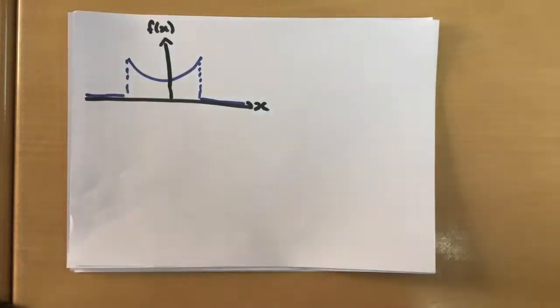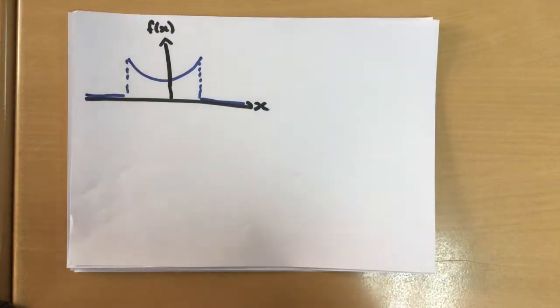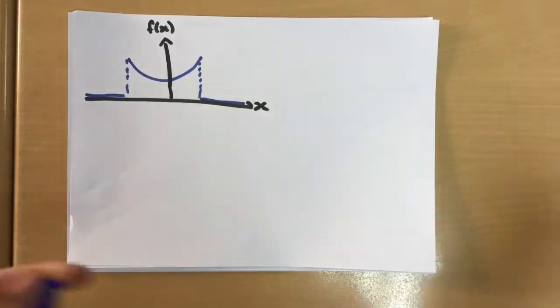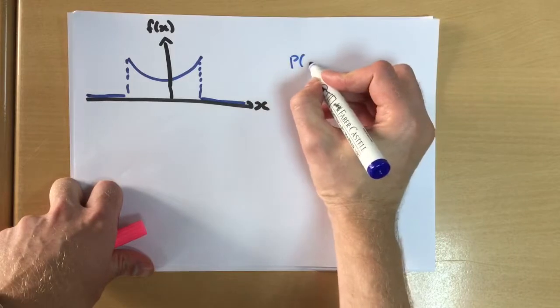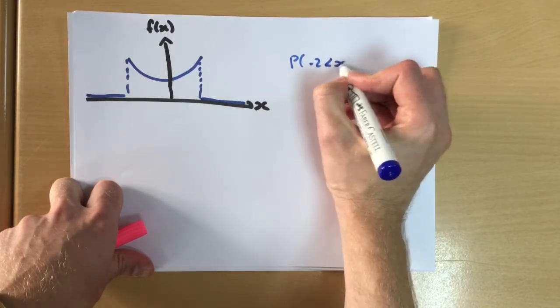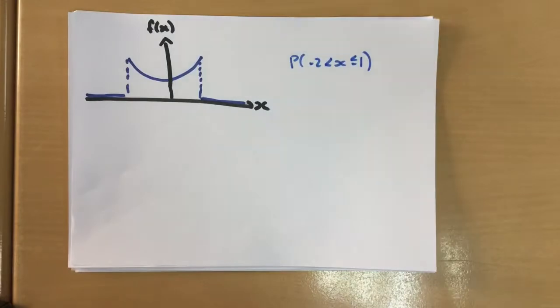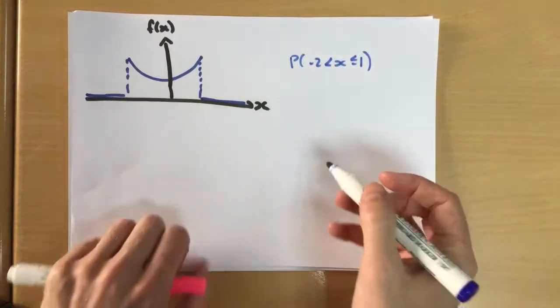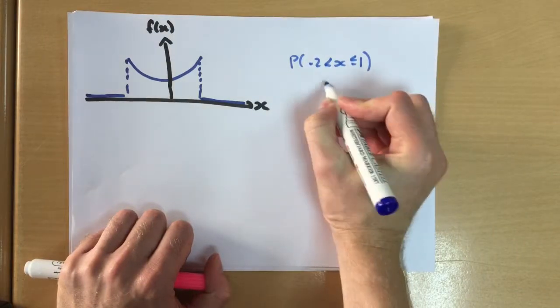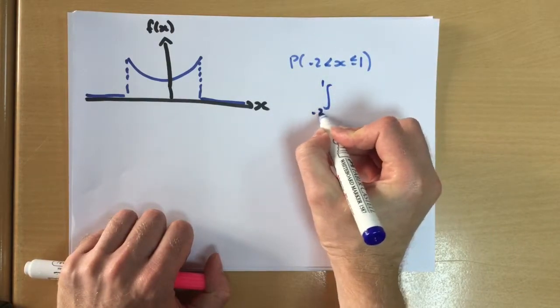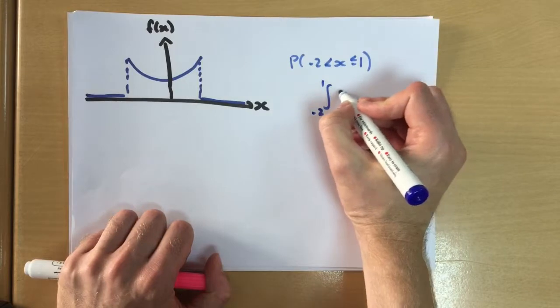Previously we would have seen a probability density function looking something like this and we may have wanted to find out the probability of getting, for example, a temperature between minus two degrees and one degree, say for snow or something. To find this out we would have to integrate between minus one and minus two using our function.